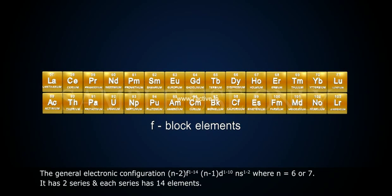The general electronic configuration is (n-2)f 1-14, (n-1)d 0-1, ns 2, where n = 6 or 7. It has 2 series and each series has 14 elements.